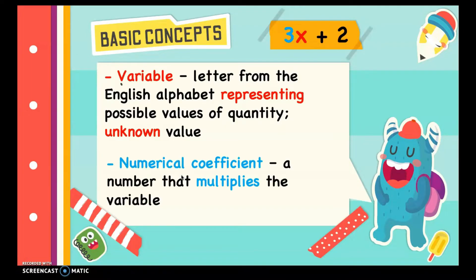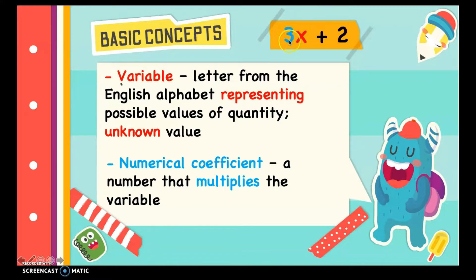Next, we have numerical coefficient. It is a number that multiplies the variable. In 3x + 2, the 3 is the numerical coefficient because it is the number being multiplied by the variable x.